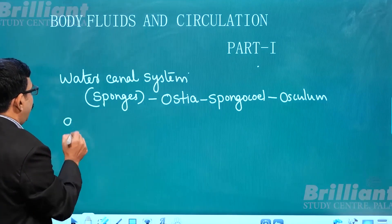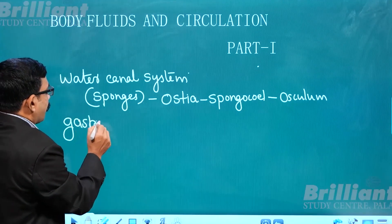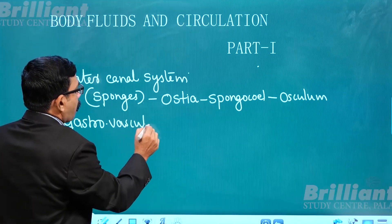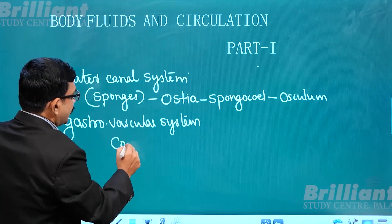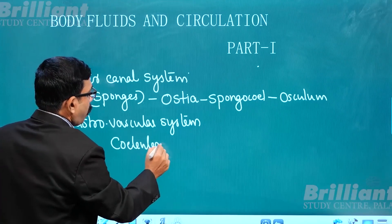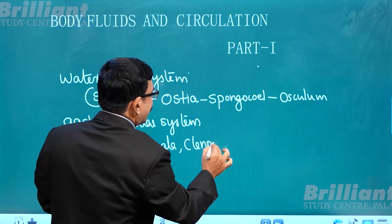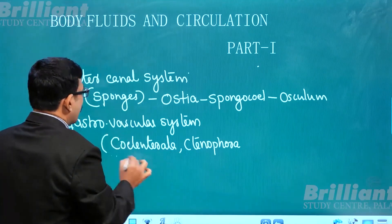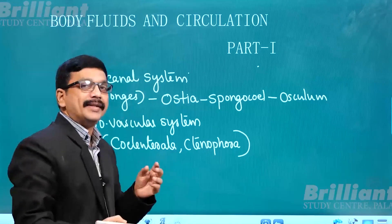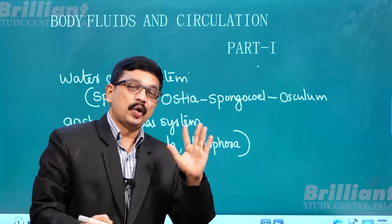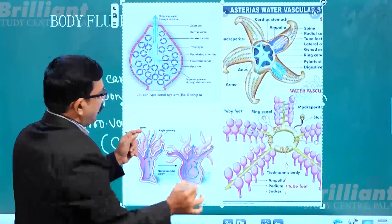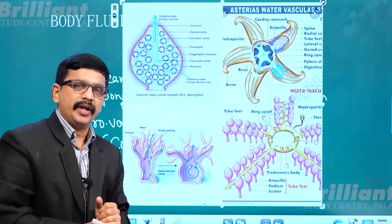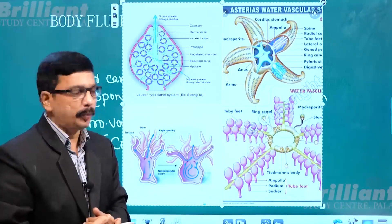In cnidarians, you can see another system — the gastro-vascular system — found in Cnidaria, Ctenophora, etc. This is the representation of certain transporting systems in lower animal groups.